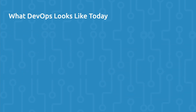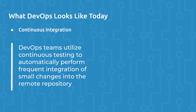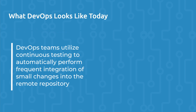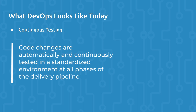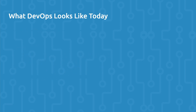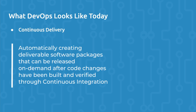Outside of the DevOps cultural philosophy, we have the practice of continuous integration. Continuous integration means that DevOps teams utilize continuous testing to automatically perform frequent integration of small changes into the remote repository. The next practice is continuous testing, which means that code changes are automatically and continually tested in a standardized environment at all phases of the delivery pipeline, from local testing to system-level tests in a production-like environment. Continuous delivery extends continuous integration and continuous testing by automatically creating deliverable software packages that can be released on demand and after code changes have been built and verified. The goal is to always have a verified and deployment-ready software build.